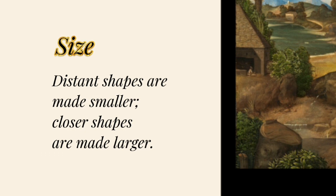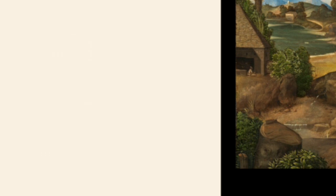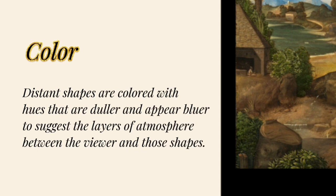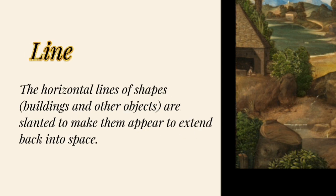In size, distant shapes are made smaller and closer shapes are made larger. In detail, distant shapes are shown with less detail and closer shapes are shown with greater detail. When we talk about color, distant shapes are colored with hues that are duller and appear bluer, due to the layer of atmosphere between the viewer and those shapes. Finally, the horizontal lines of shapes are slanted to make them appear to extend back into space.